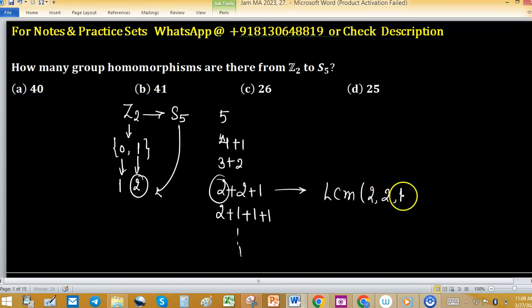So 2, 2, 1, we are getting 2. And in this case, the second case, we are also obtaining LCM as 2. So these two partitions give you the number of elements of order 2.